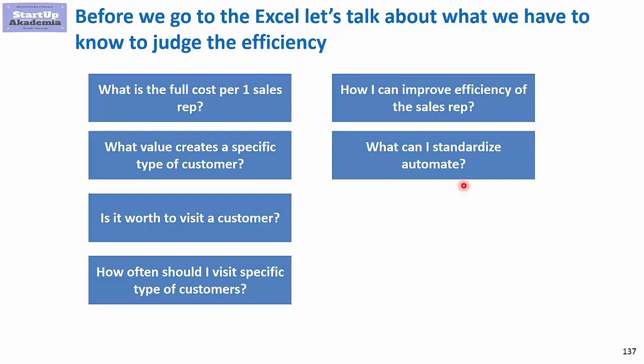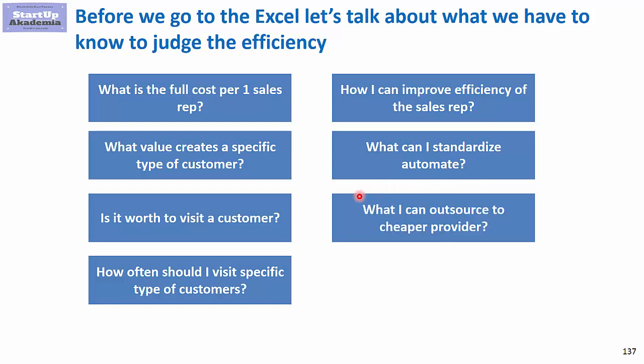Having one standard for every sales rep and every customer, or automating processes to make a person unnecessary in the whole process, are key improvements. You should also consider what you can outsource to a cheaper provider — either a person supporting the sales rep or an outside company providing the service — so you don't have to build it into the visits the sales rep is doing.